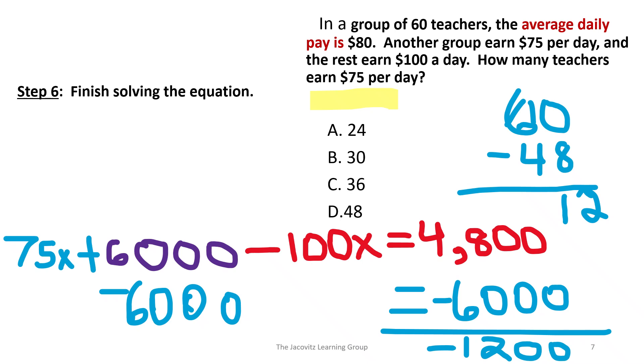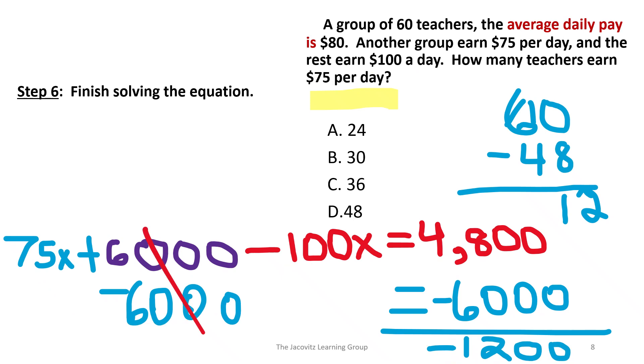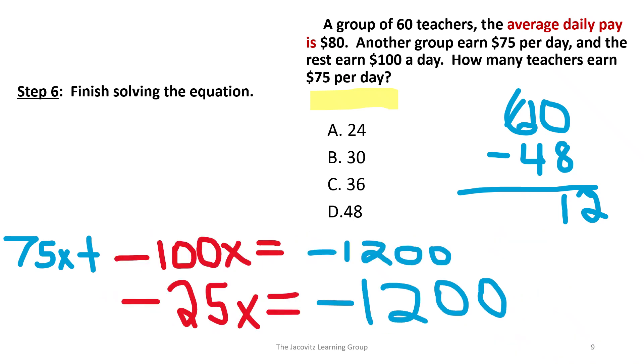So now you have 75X plus, and these are going to cancel out. Look what's happening - your equation is starting to add itself. When you take 6,000 over to this side, it's negative because it's positive here. So when you take it over, it becomes negative 1,200. Your like terms are here. Your 75X is here, and your 100X is here. These are like terms because both have an X. So that's negative 25X equals negative 1,200.